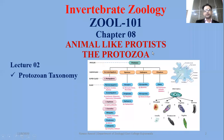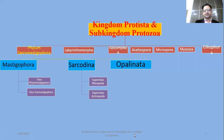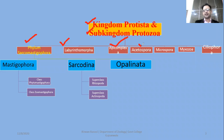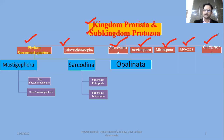In Protozoan taxonomy, different systems classify it in different ways. The edition which we are following is the 5th edition of Miller and Harley's Zoology. There are 7 phyla in Kingdom Protista, Sub-Kingdom Protozoa. The first 7 phyla are: Sarcomastigophora, Labyrinthiomorpha, Apicomplexa, Acetospora, Microspora, Myxozoa, and Ciliophora. We will discuss all of them in detail, but today we will discuss the introductory details.